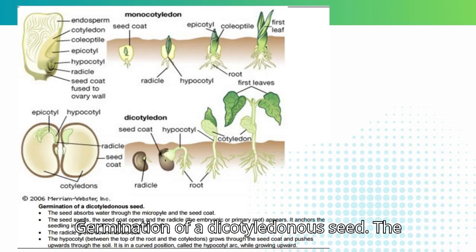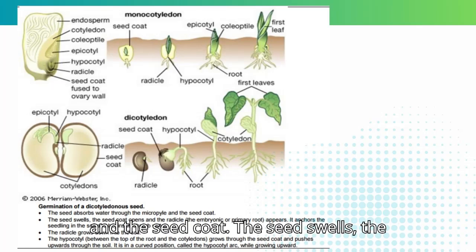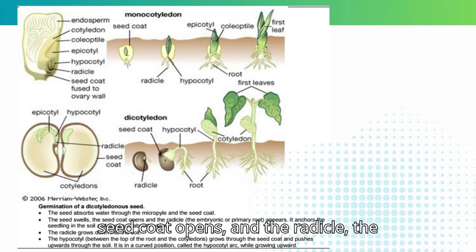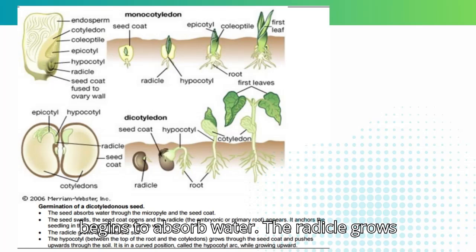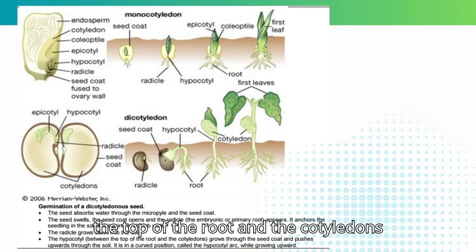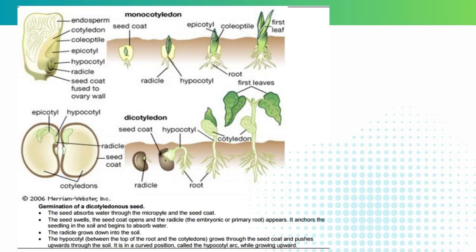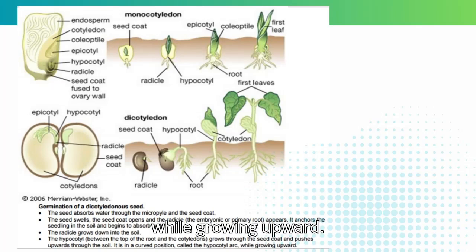Germination of a dicotyledonous seed. The seed absorbs water through the micropyle and the seed coat. The seed swells, the seed coat opens and the radicle — the embryonic or primary root — appears; it anchors the seedling in the soil and begins to absorb water. The radicle grows down into the soil. The hypocotyl, between the top of the root and the cotyledons, grows through the seed coat and pushes upwards through the soil. It is in a curved position called the hypocotyl arc while growing upward.